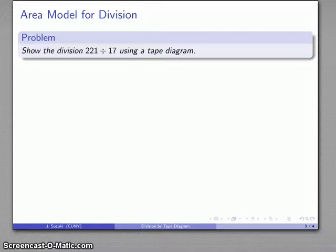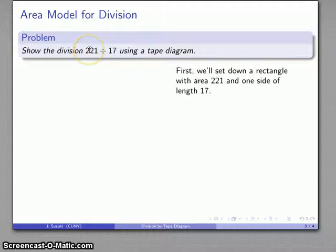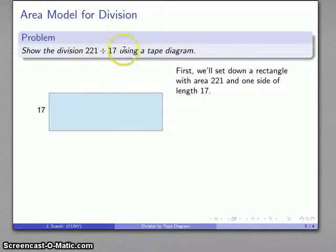So let's take a look at that. So remember area is the product is the dividend. So this dividend 221 is the area of my rectangle and the divisor is going to be one side. So I have an area, 221, one side equal to 17 and my question is how big is the other side?